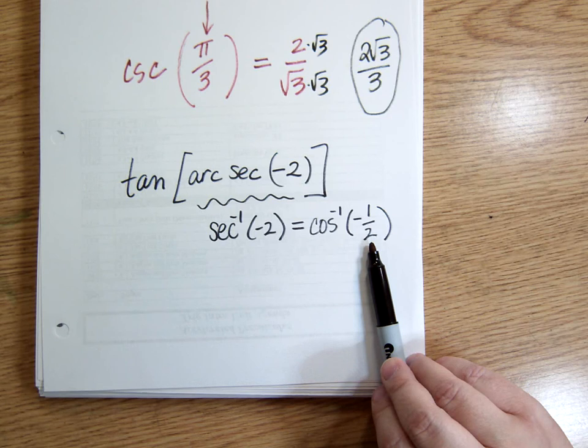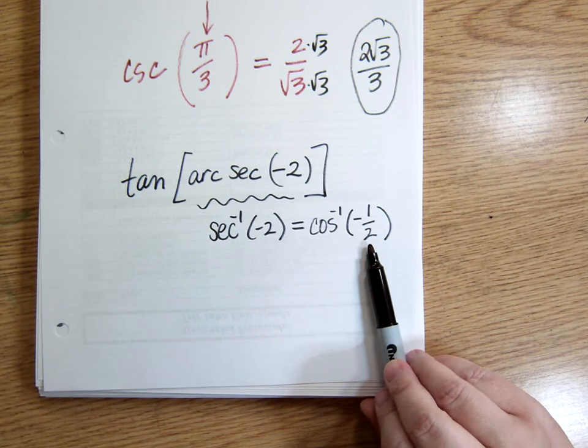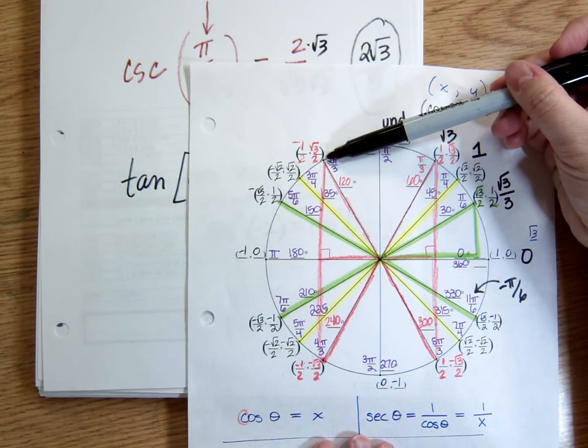So in quadrant 2, I'm looking for where the cosine is equal to 1 half, and it's up here at 2 pi over 3.